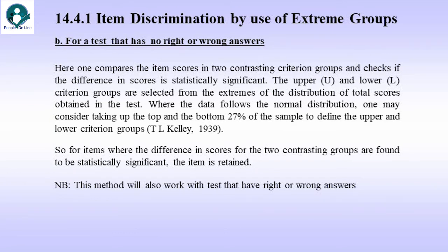Item discrimination by use of extreme groups, but this time for a test that has no right or wrong answers. Here, one compares the item scores in two contrasting criterion groups and checks if the difference in scores is statistically significant. The upper and lower criterion groups are selected from the extremes of the distribution of total scores obtained in the test. Where the data follows a normal distribution, one may consider taking up the top and the bottom 27% of the sample to define the upper and lower criterion groups. This is as arrived at by T.L. Kelly. So, for items where difference in scores for the two contrasting groups are found to be statistically significant, the item is retained. Note, this method will also work with tests that have right or wrong answers.